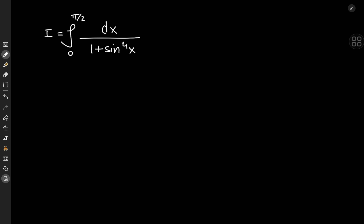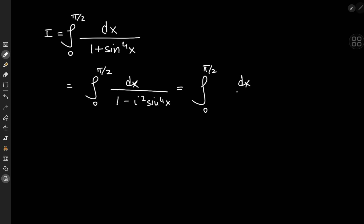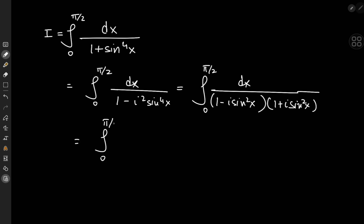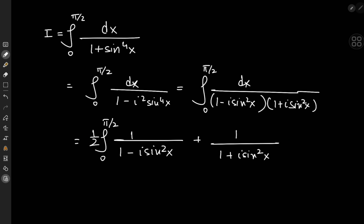We'll start off by factorizing the denominator in the complex realm. We write it as the integral from 0 to π/2 of dx divided by 1 minus i² times sine to the fourth power of x. We can then factorize this as (1 minus i·sin²x)(1 plus i·sin²x). Next, we need a partial fraction decomposition, which is pretty straightforward: one-half times [1/(1 minus i·sin²x) plus 1/(1 plus i·sin²x)].